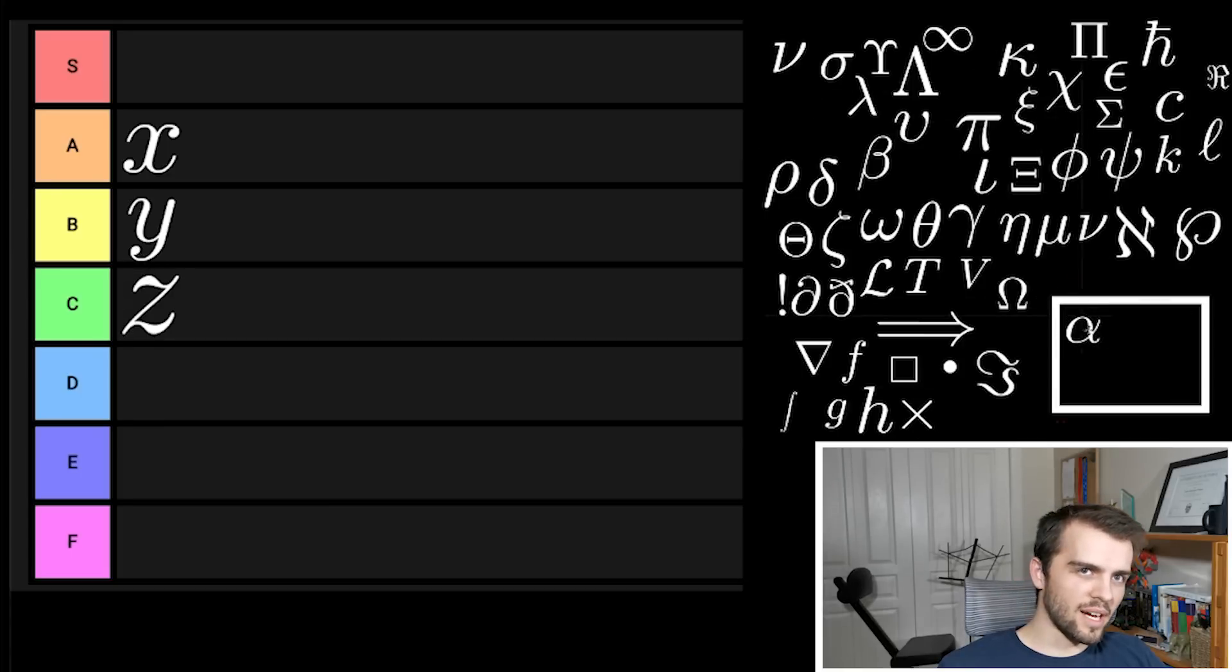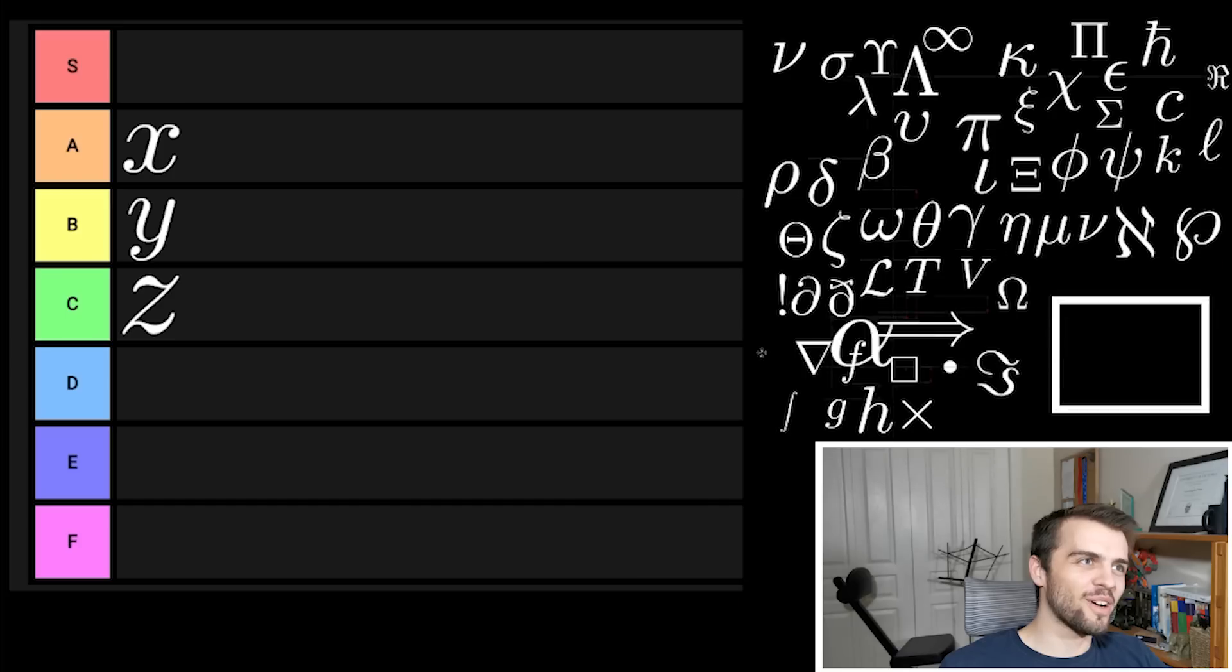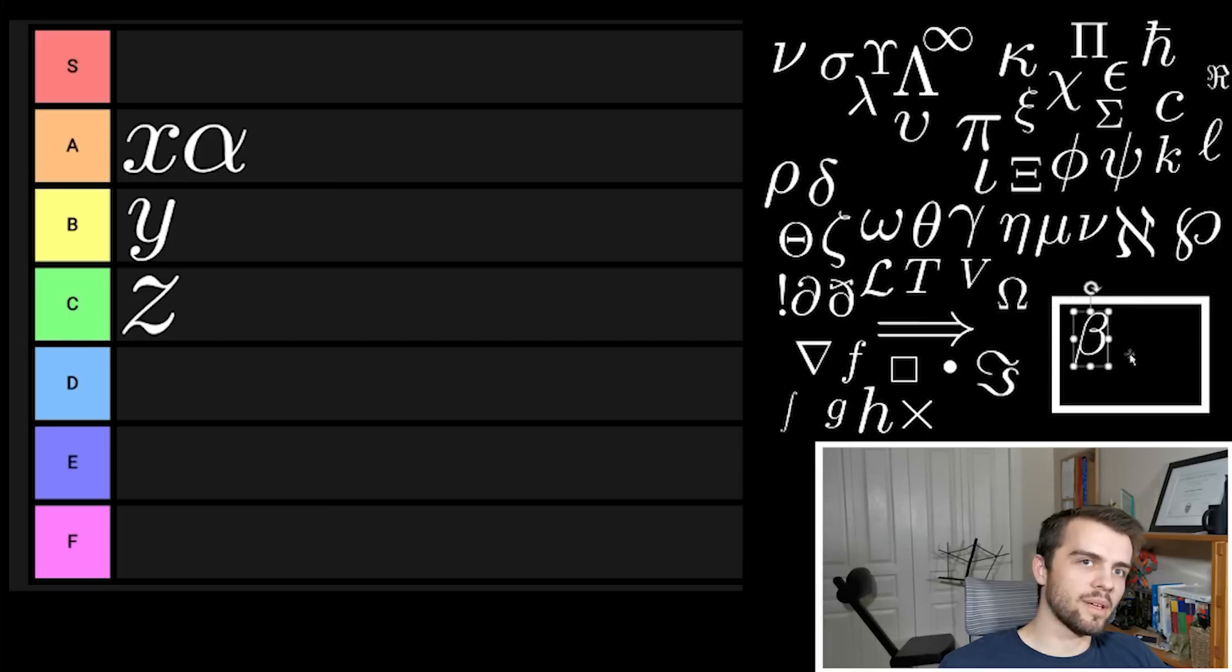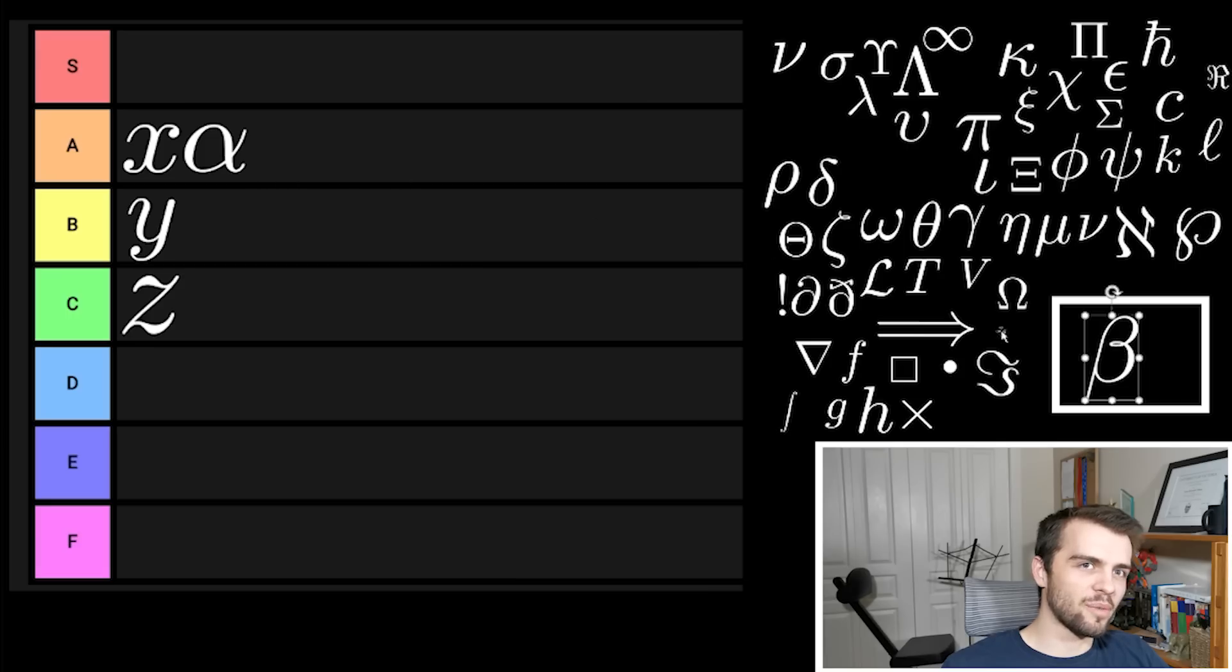Now here's a beauty: we got alpha. I like alpha. It's kind of hard to write when you first start learning, but maybe I just like alpha because I am one. Alpha I'm going to put in A tier. Beta of course is the next letter in the Greek alphabet. I don't like beta because I'm not one. I'm going to put beta in B tier, and there's a pattern here but don't even think that.